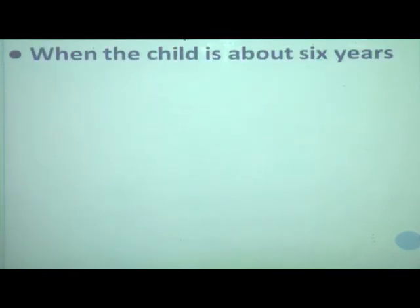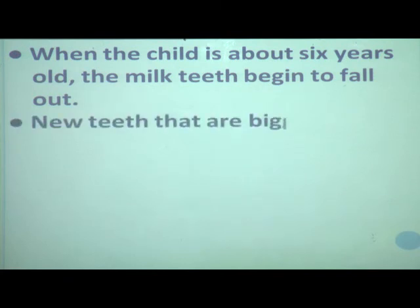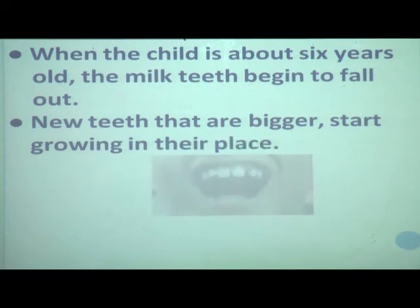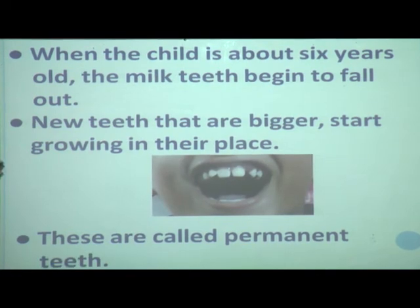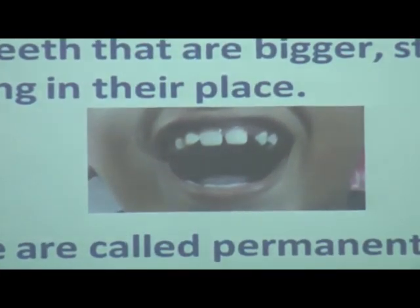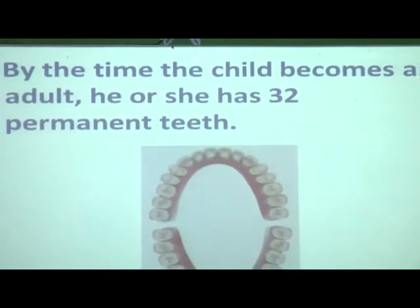This first set of teeth is called milk teeth or temporary teeth. When the child is about 6 years old, the milk teeth begin to fall out, and new teeth that are bigger start growing in their place. These are called permanent teeth. By the time the child becomes an adult, he or she has 32 permanent teeth.